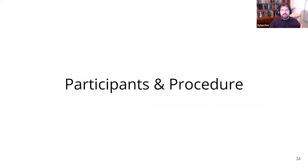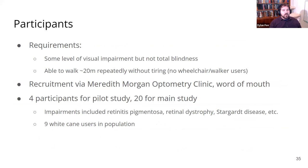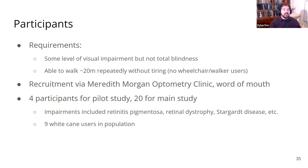Now let's talk about our participants and procedures. The requirements for participants were that they had some level of visual impairment but not total blindness, and that they were able to walk about 20 meters repeatedly without tiring and able to step over obstacles — so no wheelchair or walker users. We recruited via the Meredith Morgan Optometry Clinic at Berkeley as well as word of mouth, and we had four participants for our pilot study and 20 for our main study. This included a wide variety of people with different types of visual impairments — things like retinitis pigmentosa, retinal dystrophy, Stargardt disease, and more. Almost half of the participants were white cane users.